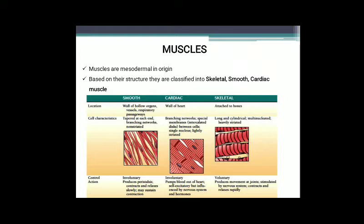Cardiac muscles have a branching network, they are lightly striated, and they are uninucleate, consisting of a single nucleus. Skeletal muscles are long and cylindrical, multi-nucleated, and heavily striated with light and dark bands. Both smooth muscles and cardiac muscles are involuntary in their action, whereas skeletal muscles are voluntary.